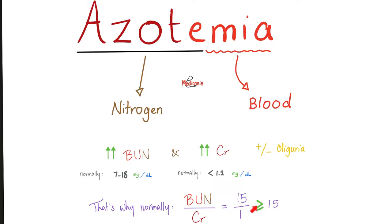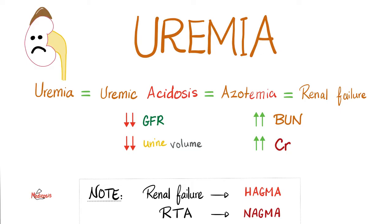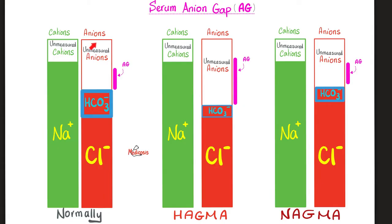In kidney failure there is accumulation of urea — uremia. Many of these waste products are acidic, causing uremic acidosis. Urea is made of nitrogen — azotemia. GFR is decreased, urine volume decreases, and BUN and creatinine are high in the blood (low in the urine). When the kidney fails, toxins accumulate in the blood, adding to the unmeasured anions. The anion gap widens, causing high anion gap metabolic acidosis.